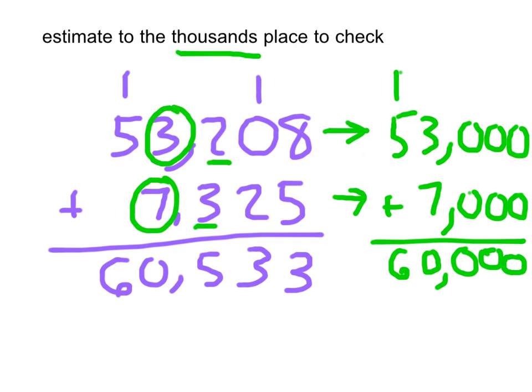Does this make sense? We went down here, 53,208, down by 208. We actually went down here as well, by 325. And so, we basically just took away that. If we take away that 533, that's how far away those two answers should be from each other.